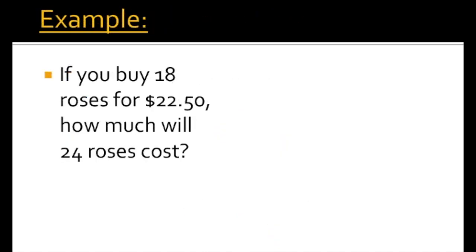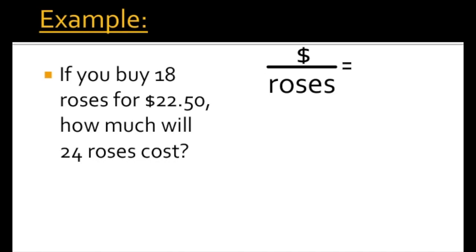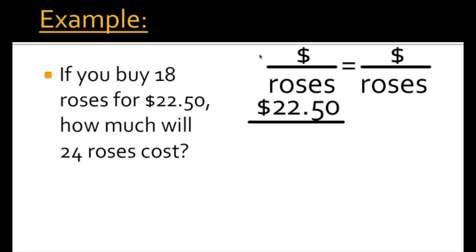For example, if you buy 18 roses for $22.50, how much will 24 roses cost? A proportion is when you set two ratios equal to each other. Our first ratio is the cost for a certain number of roses. We have to make sure the other side of the proportion has the same unit set up the same way — dollars on top and roses on the bottom. We know we have 18 roses that cost $22.50. So we'll have $22.50 over 18 roses. This is our first ratio.